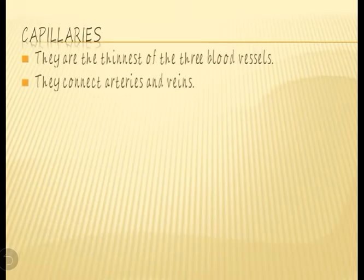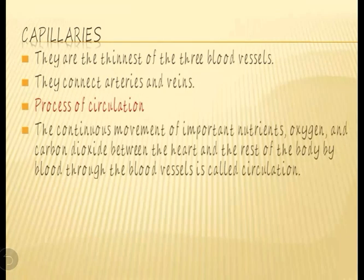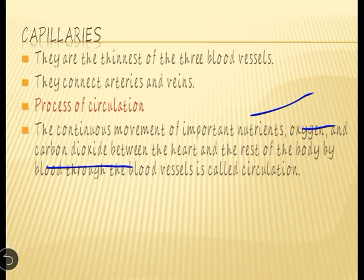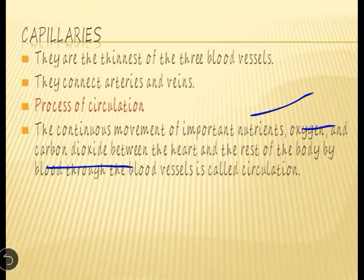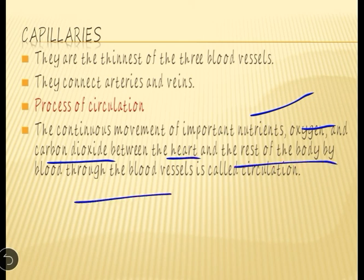Next is the process of circulation — how circulation takes place in our body. Circulation is the continuous movement of nutrients, oxygen, and carbon dioxide between the heart and the rest of the body through the blood vessels. This is how the circulation process takes place in our body.